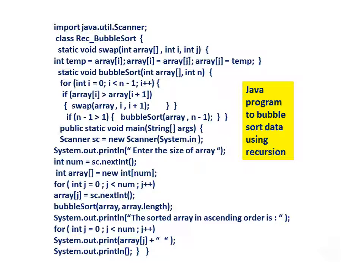Static void bubbleSort(int array, int n): for int i equals 0, i less than n minus 1, i plus plus — if array[i] greater than array[i+1], swap(array, i, i+1). If n minus 1 greater than 1, bubbleSort(array, n minus 1).